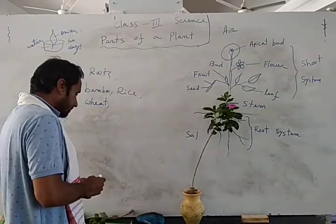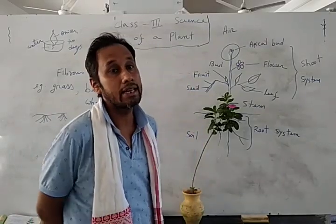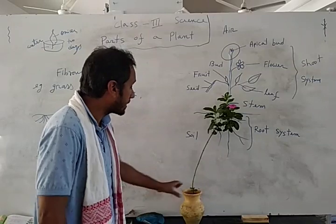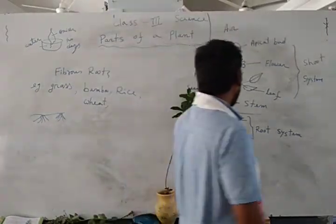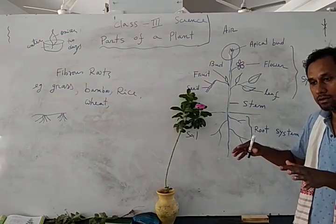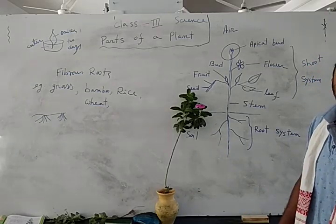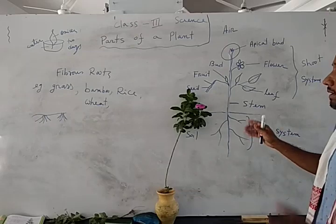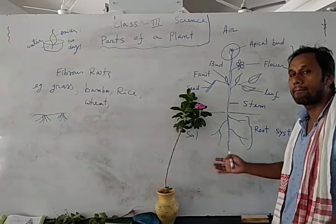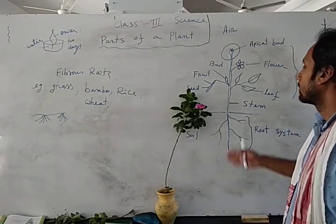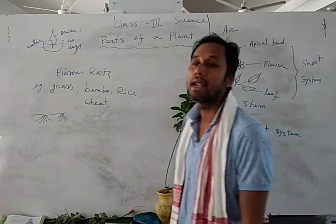After learning about the two kinds of root systems, you need to know about their functions — how the root system helps a plant. The first function is: with the help of the root system, the plant holds firmly in the soil. The main function is that roots keep the plant upright in the soil. The second function is the absorption of water and minerals for the whole plant.